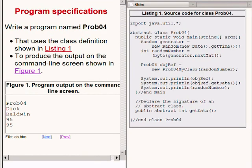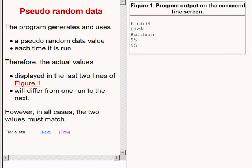The program specifications are to write a program named prob04 that uses the class definition that you see on the right-hand side of your screen to produce the output on the command line screen that you see here. This program generates and uses a pseudo-random data value each time it is run. Therefore, the actual values displayed in the last two lines will differ from one run to the next. However, in all cases, the two values must match.